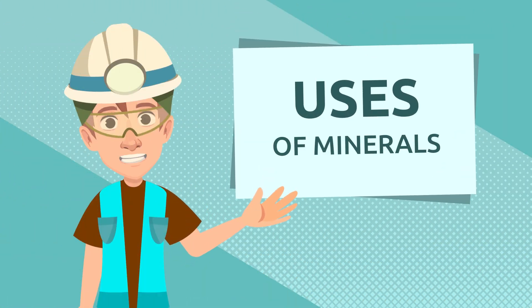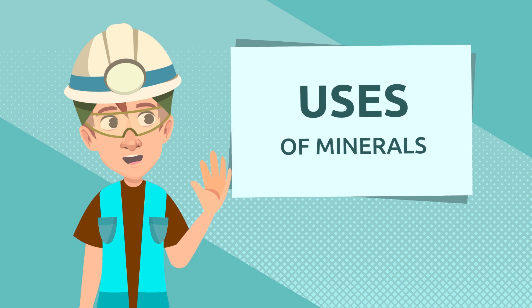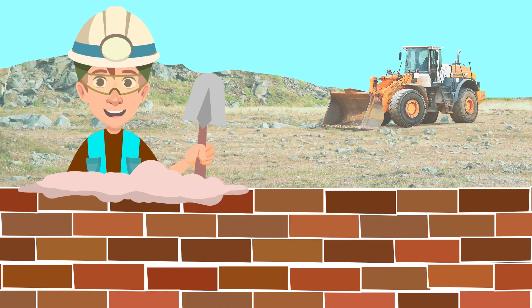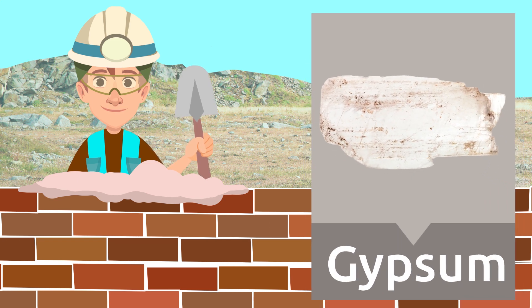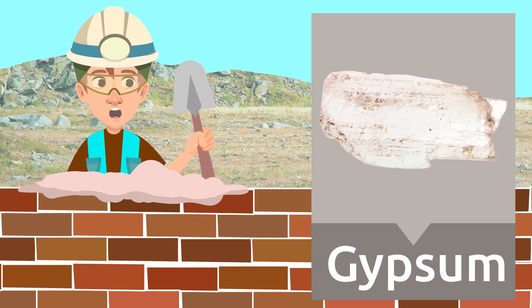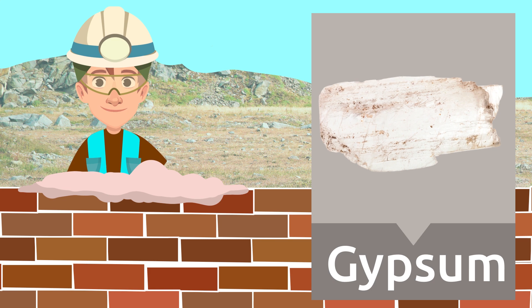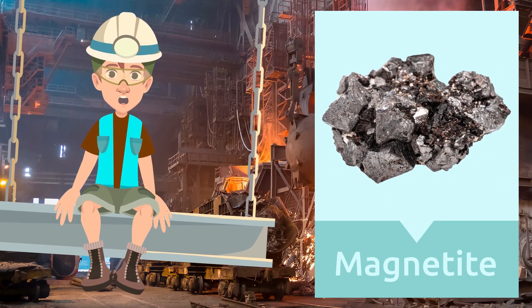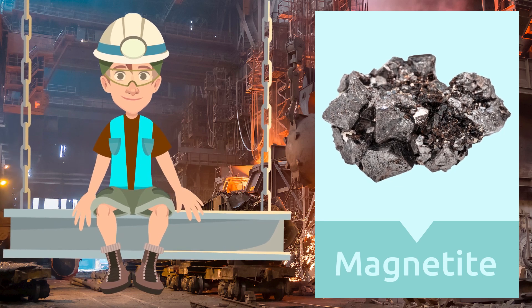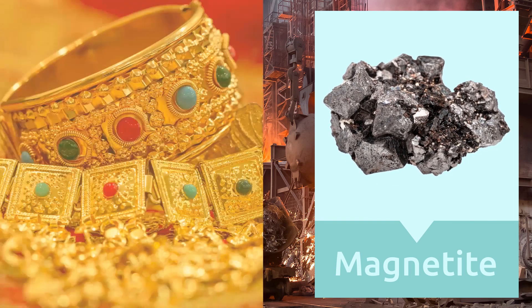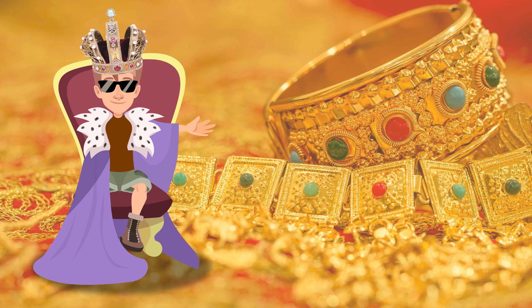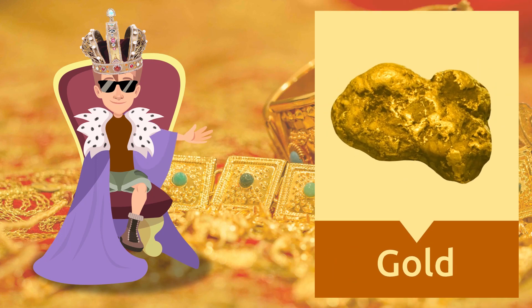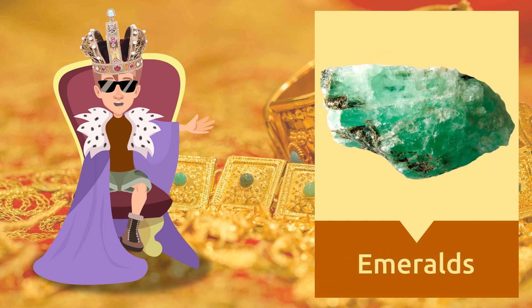Did you know that we use minerals for many things? Let's look at some examples. Gypsum is a mineral used in construction — it helps to smooth out the surface of walls before painting them. To make metals like iron, we use a mineral called magnetite. To make jewelry, we use minerals like diamonds, gold, or emeralds.